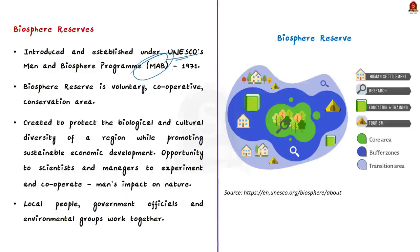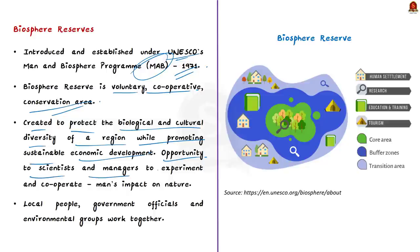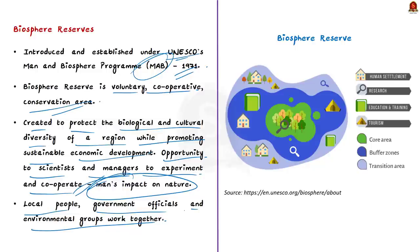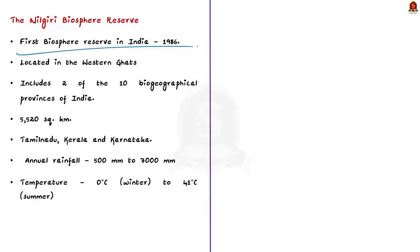What is a biosphere reserve? The concept was introduced under UNESCO's Man and Biosphere Program in 1971. A biosphere reserve is a voluntary cooperative conservation area created to protect the biological and cultural diversity of a region while promoting sustainable economic development — simply, balancing biodiversity with economic development. It provides an opportunity for scientists and managers to cooperate in generating data for understanding humanity's impact on nature. The two main biosphere reserves in Kerala are the Nilgiri Biosphere Reserve and Agastya Mala Biosphere Reserve. The Nilgiri Biosphere Reserve was the first biosphere reserve in India, established in 1986.